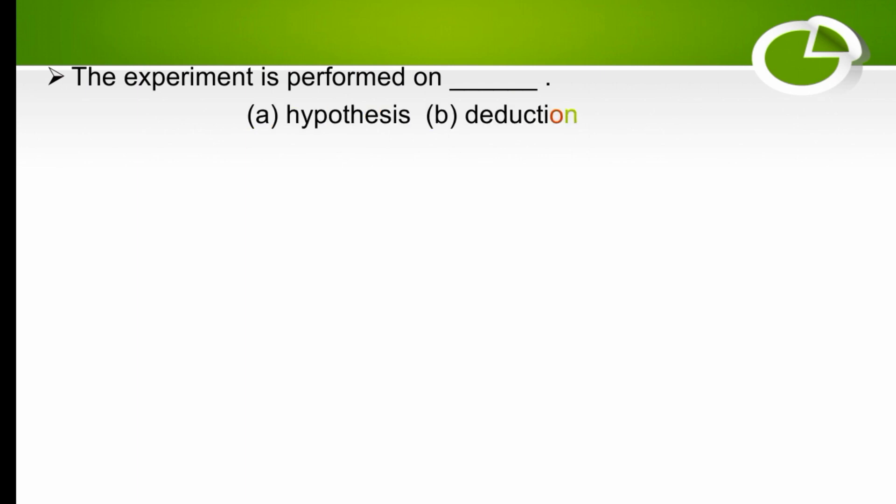The experiment is performed on which? The options are hypothesis, deduction, or both. The experiment is mostly performed on both hypothesis and deduction, so the right option is both.